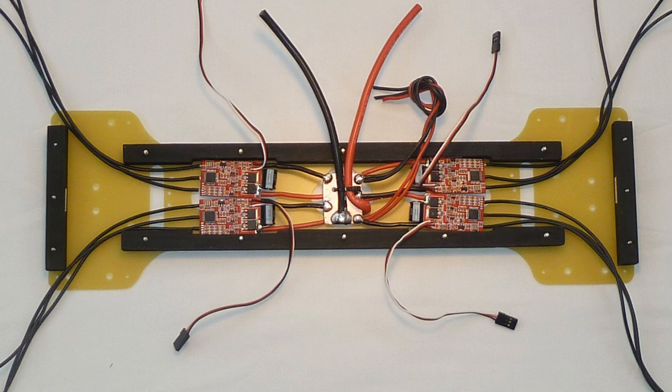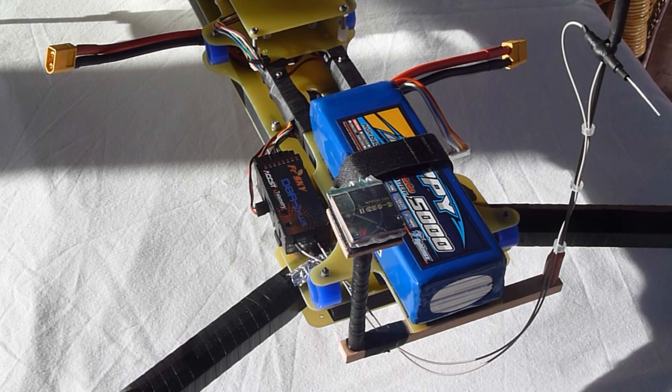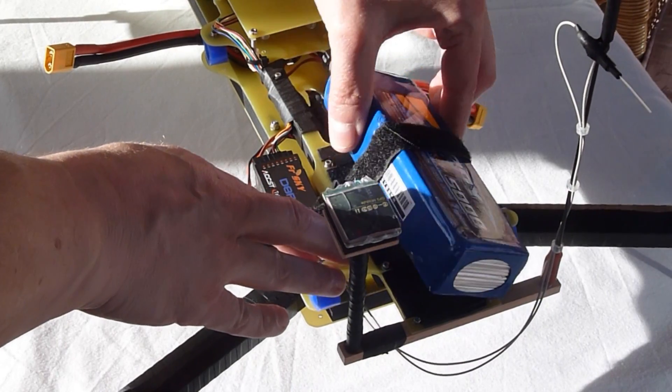The ESCs are Hobbyking F30A flashed with Simon K firmware. The props are Groutner 10x5 electro props and the battery is a 5000mAh 4S at 25C or above.